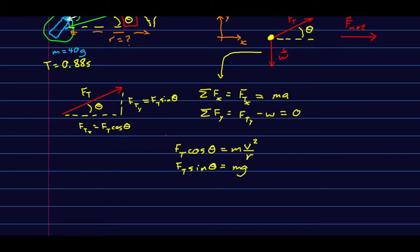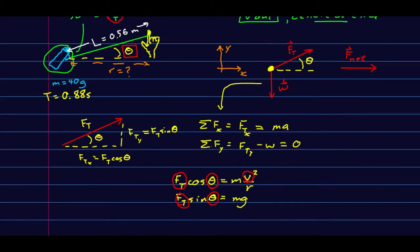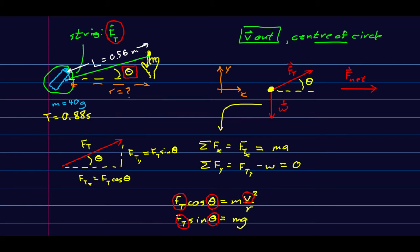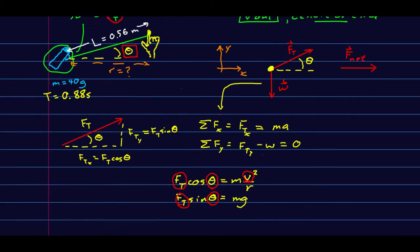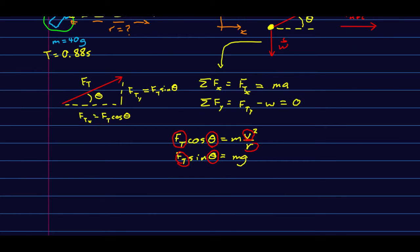If you count unknowns you'll notice we don't know F_t, we don't know theta, we don't know v, and we also don't know r. We know this l, the length of the string, but this r here we don't know. We'll be able to write an expression for it easily, but at the moment that's where we are.